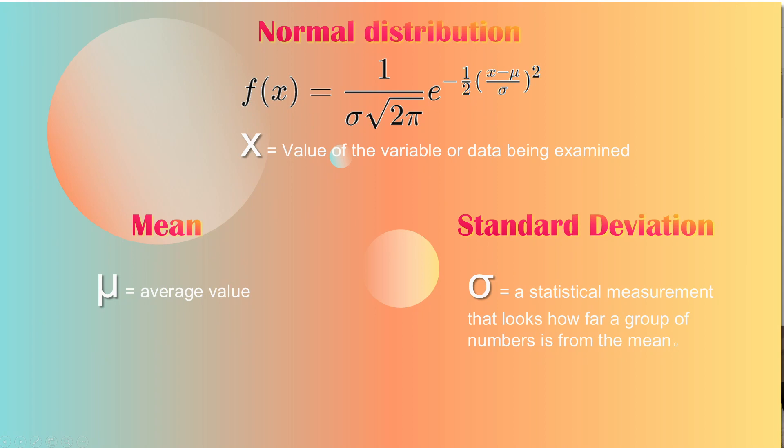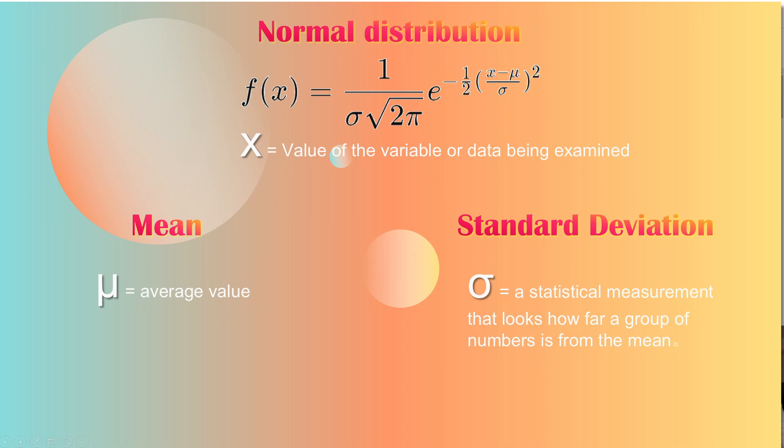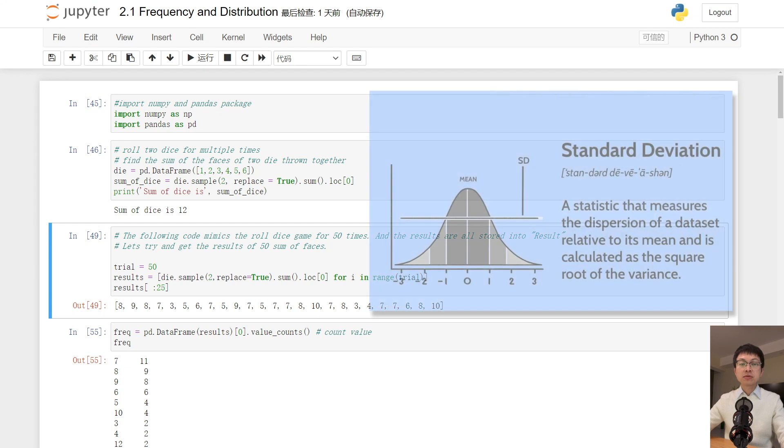The standard normal distribution has two parameters: the mean, which is the average value, and the standard deviation, which is a statistical measurement that looks at how far a group of numbers is from the mean.